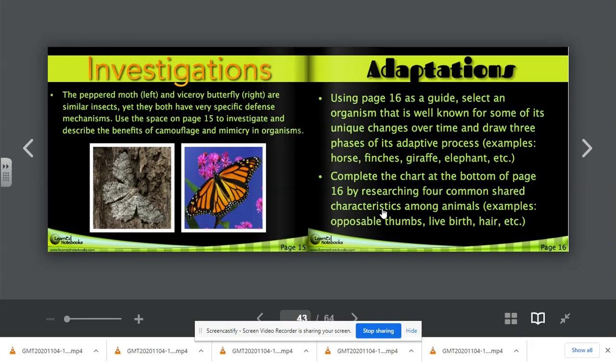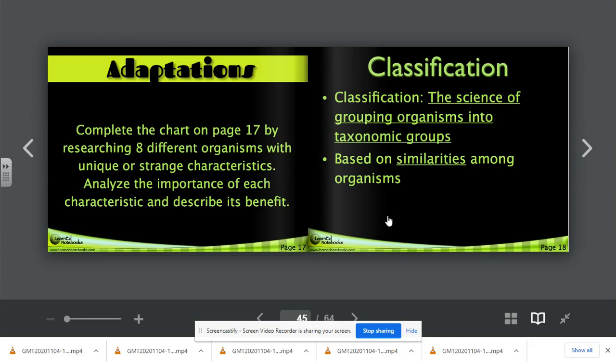Adaptations. Using page sixteen as a guide, once we finish page sixteen, I want you to go ahead and select an organism that is well known for some of its unique changes over time, and draw three phases of its adaptive process. For example, a horse or finches, like we're going to talk about in class, giraffes, elephants. Complete the chart at the bottom of page sixteen by researching four common shared characteristics among animals, such as opposable thumbs, live birth, hair, etc. Don't worry about doing this on your own. We will do this together in class. The same as the chart on page seventeen. We will be researching eight different organisms with unique or strange characteristics. We're going to analyze the importance of each characteristic and describe its benefit.